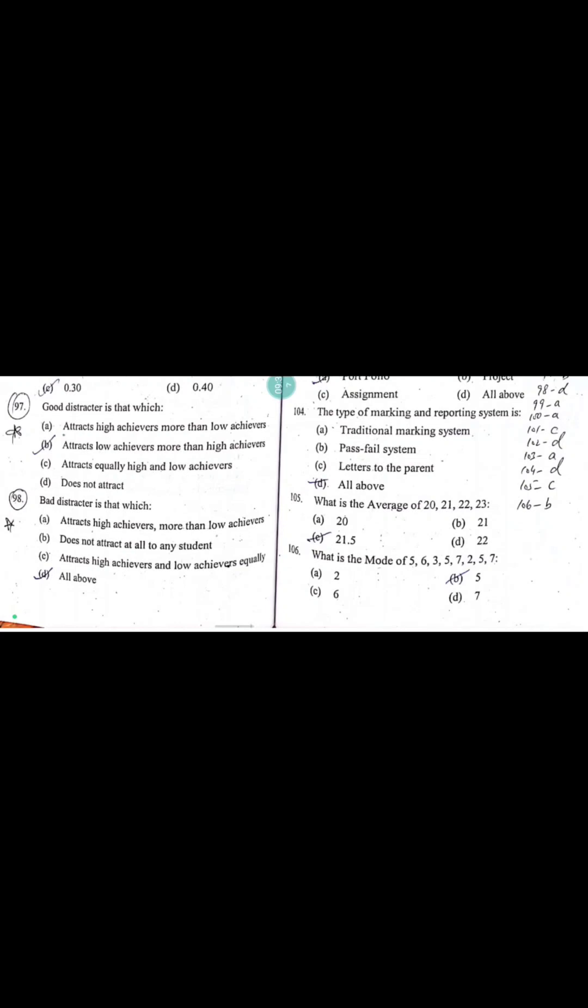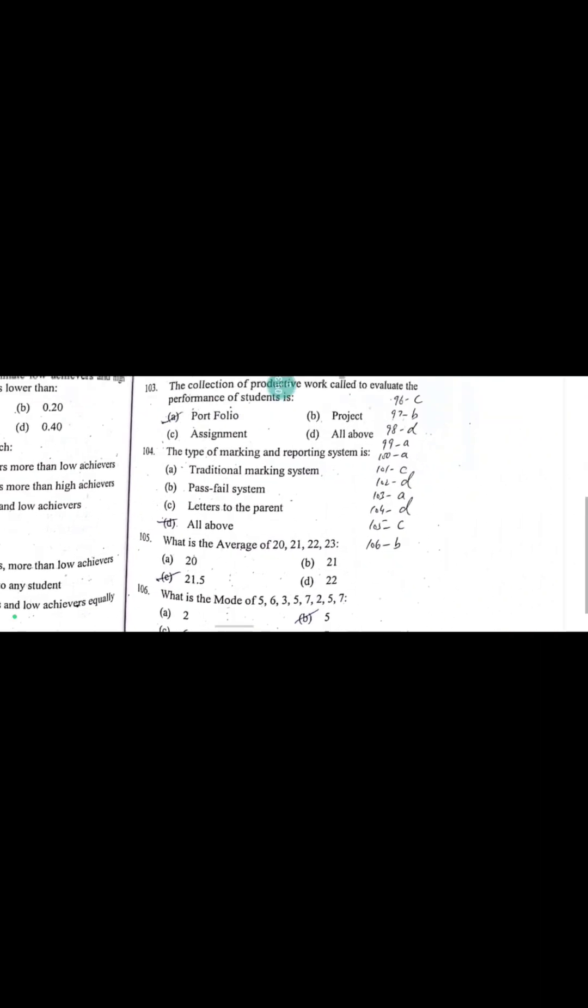A good distractor is that which, right option B, attracts the low achievers more than high achievers. Bad distractor is that which, correct option D, is all of the above.